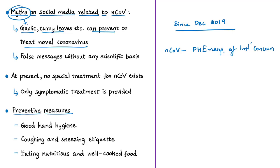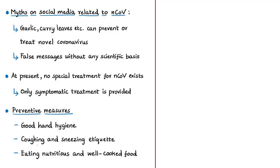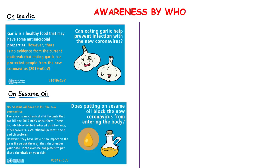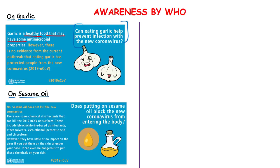Messages about superfoods and home remedies for prevention or treatment of coronavirus have no scientific basis. At present there is no specific treatment for novel coronavirus — patients receive only symptomatic treatment based on exhibited symptoms. People are requested to maintain good hand hygiene, proper coughing and sneezing etiquette, and eat nutritious, well-cooked food. The WHO has clarified that garlic may have some antimicrobial properties but there is no evidence that eating it has protected people from the new coronavirus.